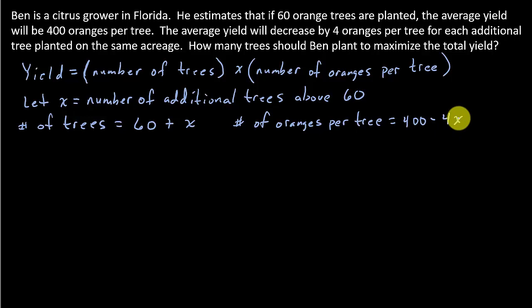So just look at it like this. If we plant 0 additional trees, so that means x would be 0, then this would be 60, and this would be 400, just what it says in the problem.